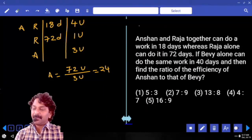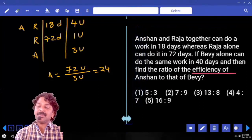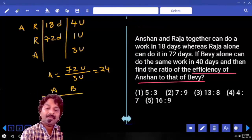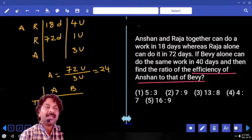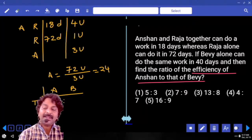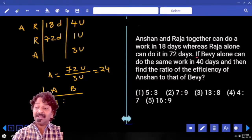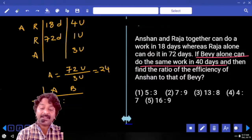But now the question is about efficiency ratio between Anshan and Bevy. How much time Anshan alone take to complete the work? 24. How many days Bevy alone can take to complete the work? It is already given in the question. 40 units.